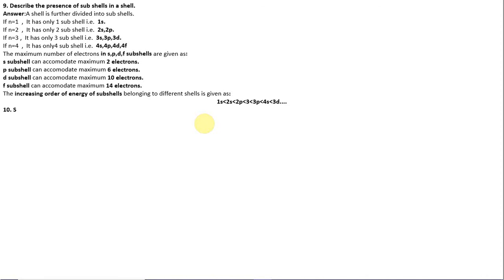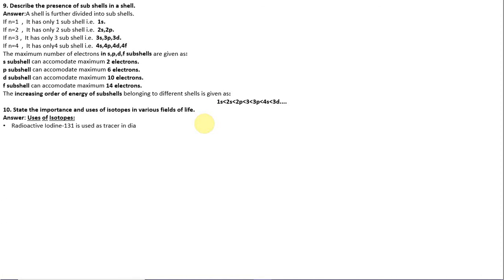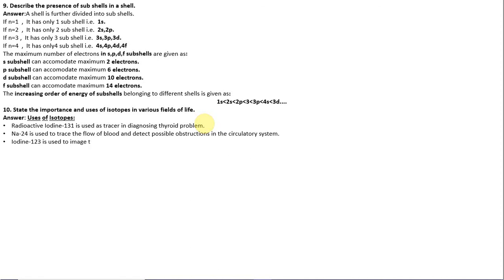Question 10: State the importance and uses of isotopes. Radioactive iodine-131 is used as a tracer in diagnosing thyroid problems. Sodium-24 is used to trace the flow of blood and detect obstructions in the circulatory system. Iodine-123 is used to image the brain. Carbon-14 is used to trace the path of carbon in photosynthesis.